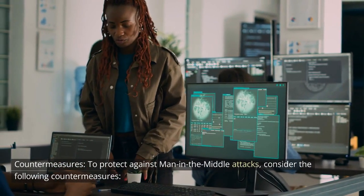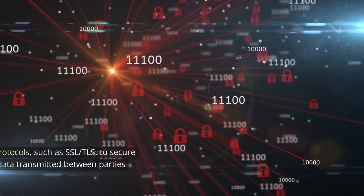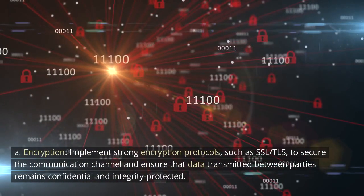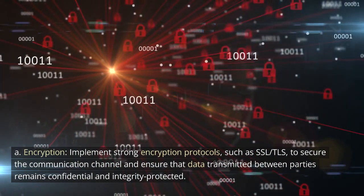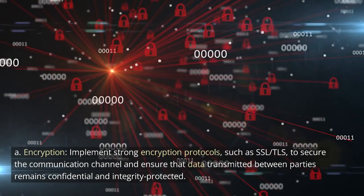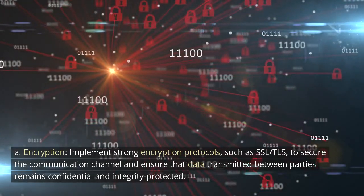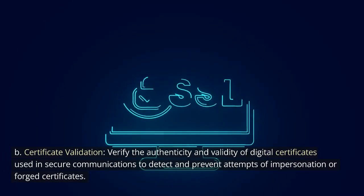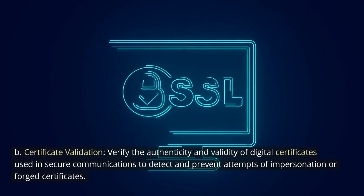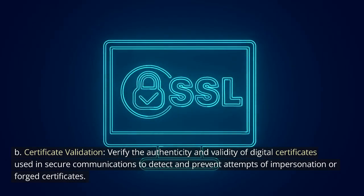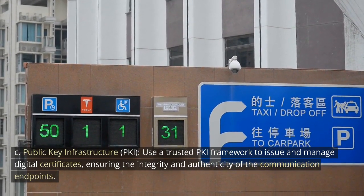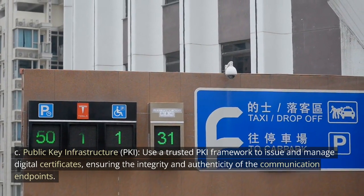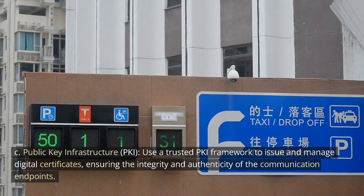To protect against man-in-the-middle attacks, consider the following countermeasures. Implement strong encryption protocols such as SSL/TLS to secure the communication channel and ensure that data transmitted between parties remains confidential and integrity-protected. Verify the authenticity and validity of digital certificates used in secure communications to detect and prevent impersonation or forged certificates. Use a trusted public key infrastructure, PKI, framework to issue and manage digital certificates, ensuring the integrity and authenticity of communication endpoints.